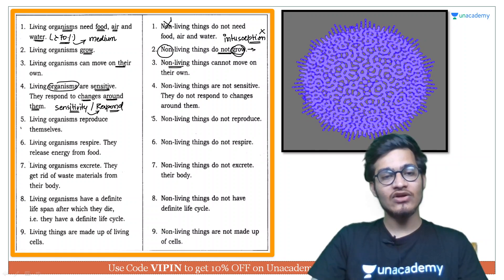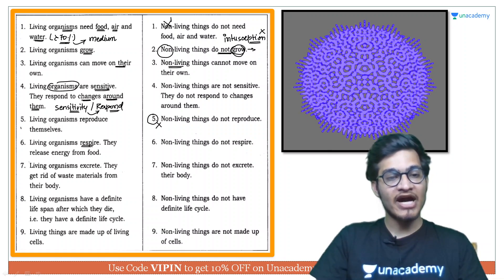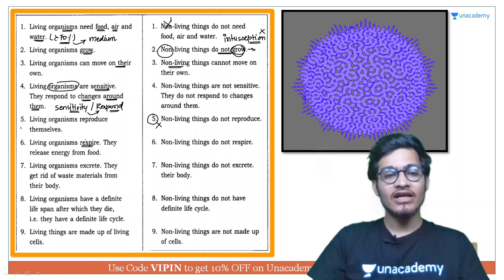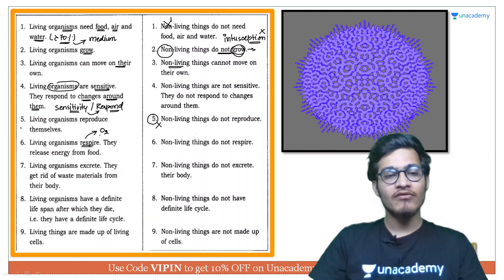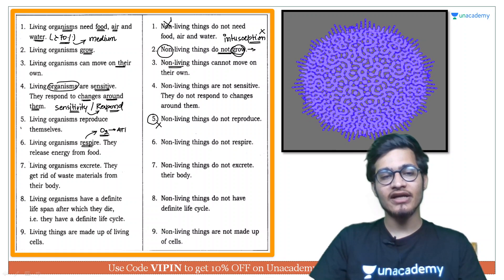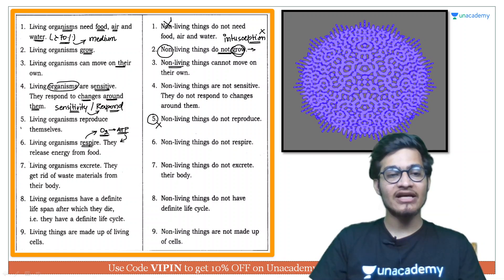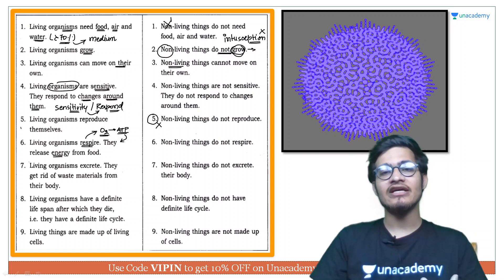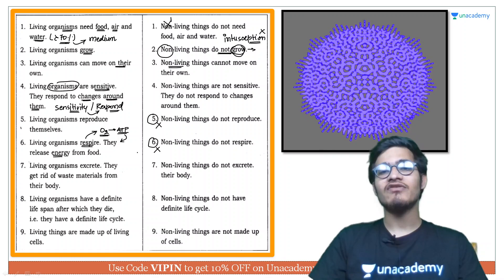Living organisms respire karte hain yani inhe energy ki zarurat rehti hai. Breathing ka matlab saans lena lekin respire ka matlab hota hai aapki body mein jo oxygen ja rahi hai wo aapki body mein pade huye food particles ko break karke energy banana jab start kare that is respiration. So living organisms respire karte hain kyunki inhe energy ya ATP ki zarurat rehti hai for variety of functions which are occurring inside our body but non-living cheezon mein aisi koi avashyakta nahi hoti because they don't need to maintain the metabolically active state.